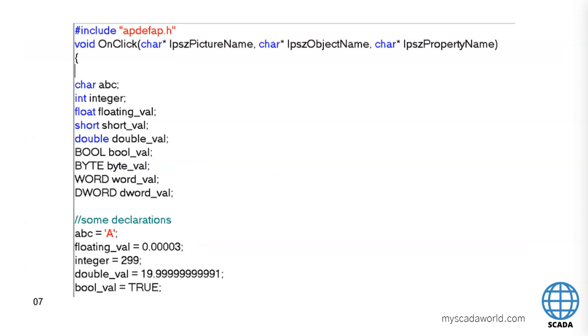Here I put some examples how to use these basic elements inside WinCC. We have char, int, float, short, double, bool, byte, word, and dword. Bool, byte, word, and dword are specific to Siemens applications. But the first ones - char, int, float, short, double - as you see, I put some declarations. ABC is for me A. The floating value is 0.00003. Integer number is 299. And, for example, double value is 19.9999991. And my bool value I can put true or false. I can use this bool value inside my script later.